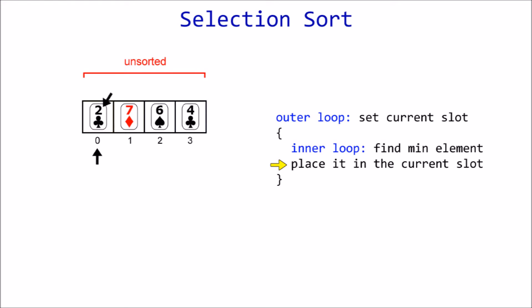The inner loop finds that the two of clubs is our minimum element, so we place it in the current slot by swapping it with whatever card is already there, in this case, six. Two now becomes part of the sorted section, so it's no longer considered in our search for the minimum.